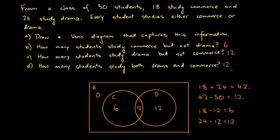You might ask: what's this got to do with probability? How can this be applied to probability? Imagine that our questions were somewhat different. Instead of 'how many students study commerce but not drama,' suppose a student from this class is chosen at random — what is the probability that that student studies commerce but not drama? Well, we know there are 30 students in the class, so 30 is going to be our denominator — the number of equally likely outcomes — and 6 is going to be the number of favourable outcomes. So the probability is 6 over 30, which reduces to 1 in 5.